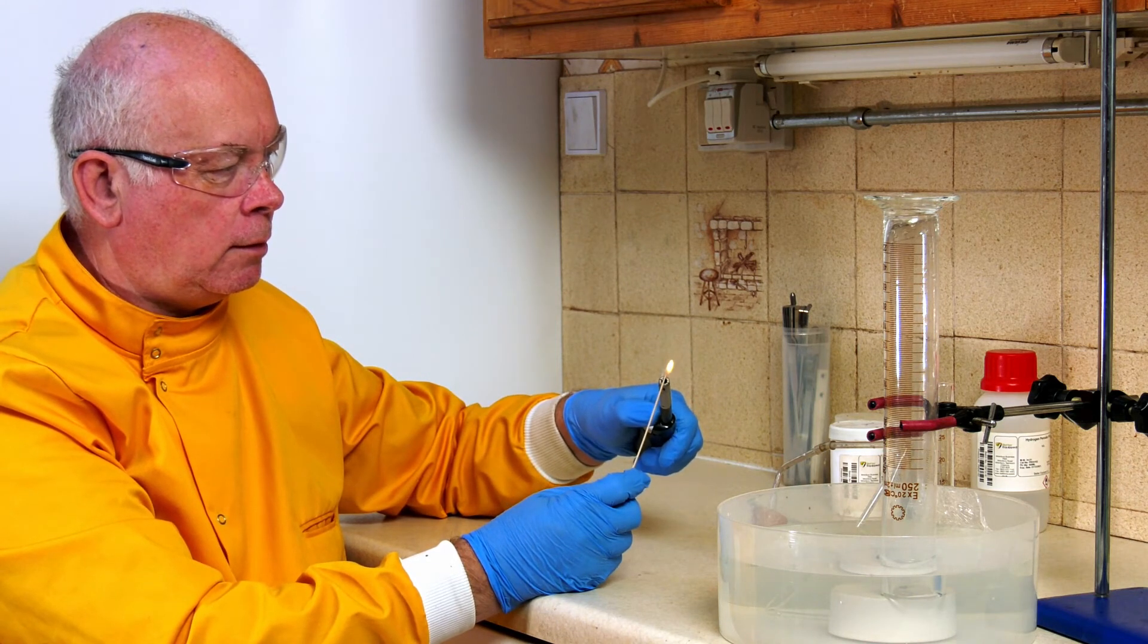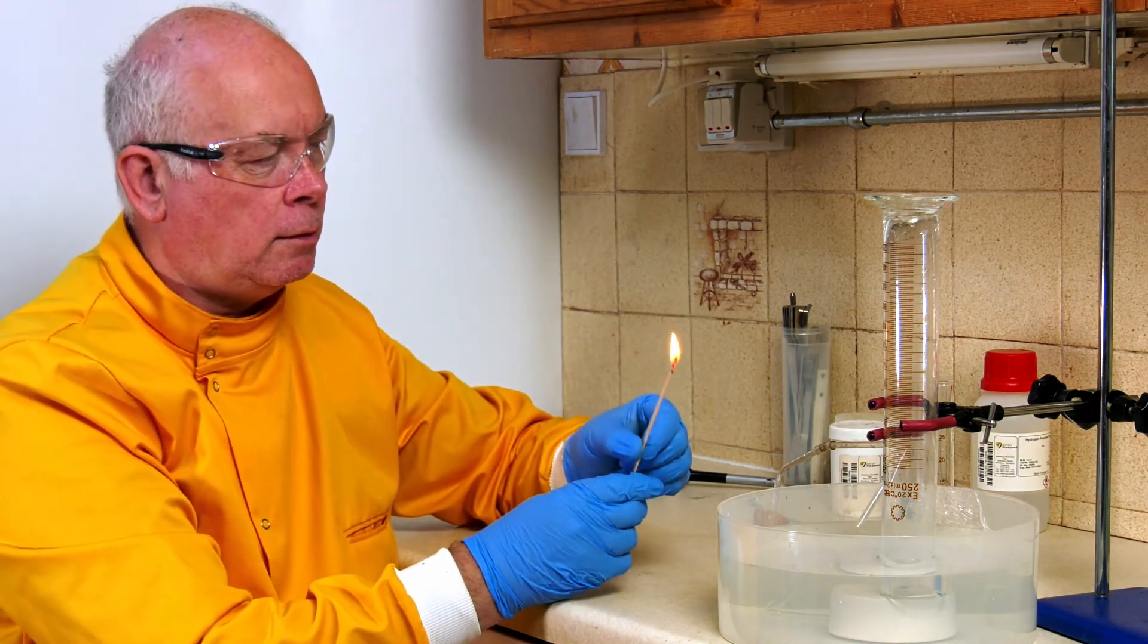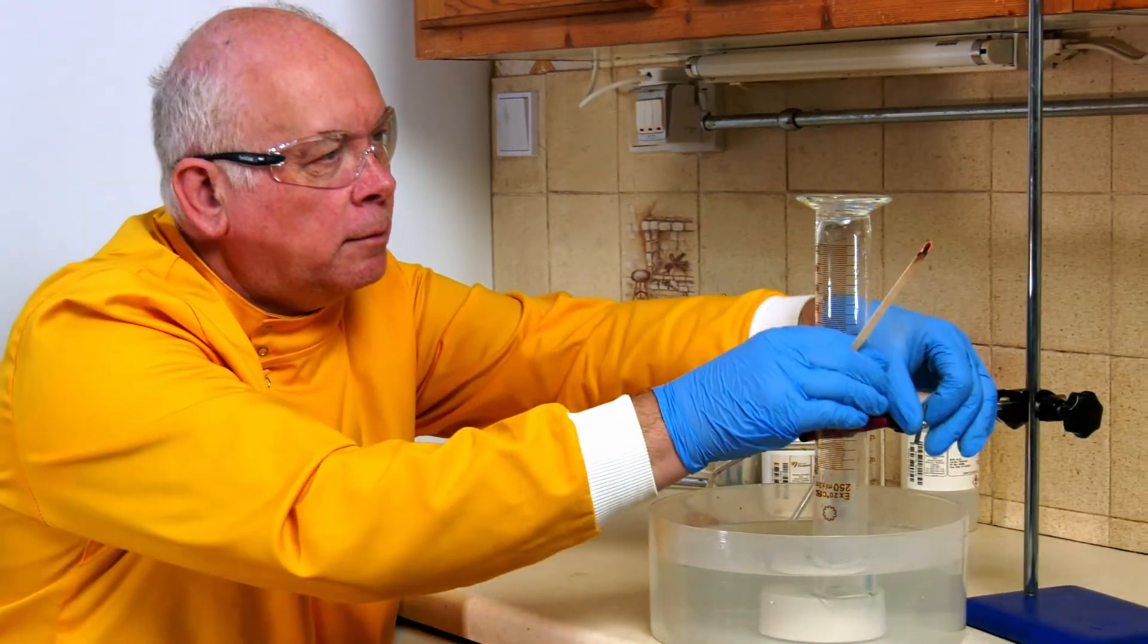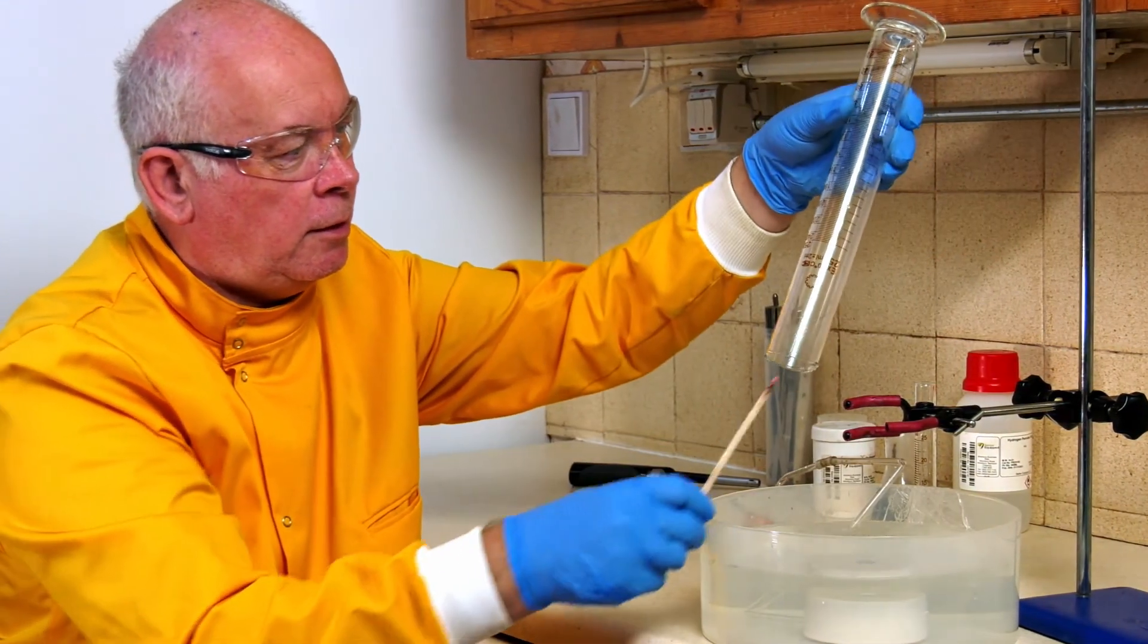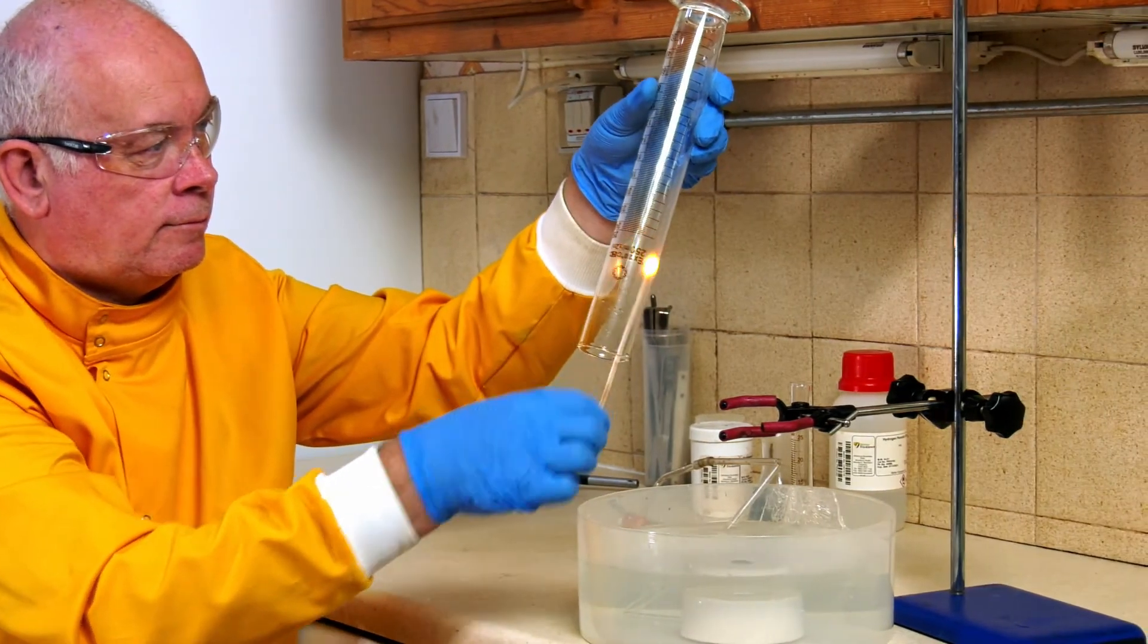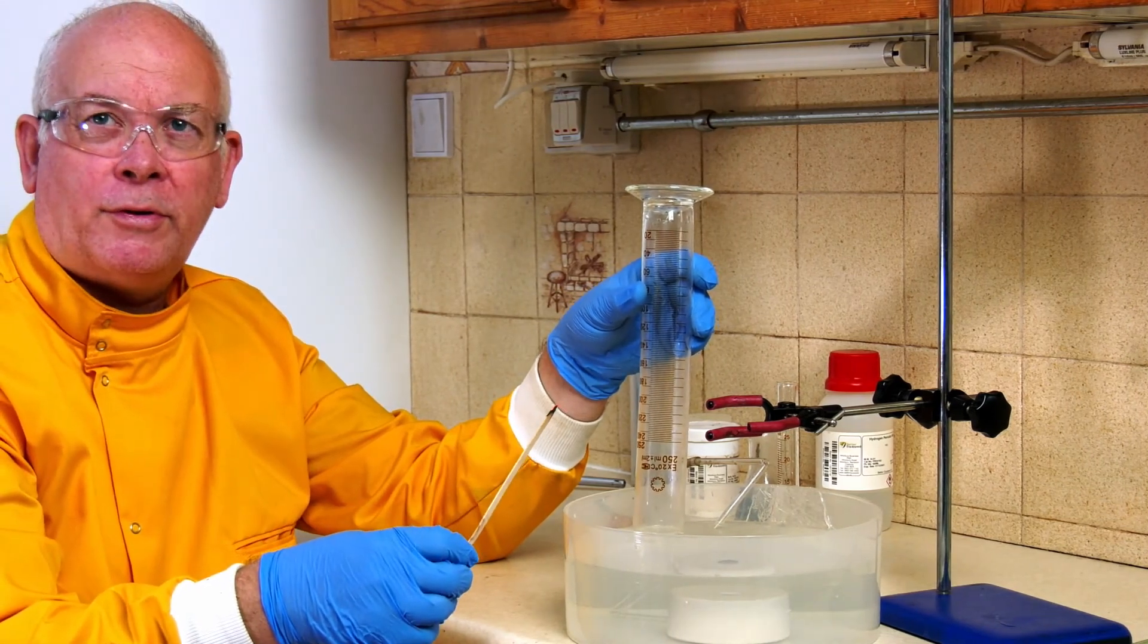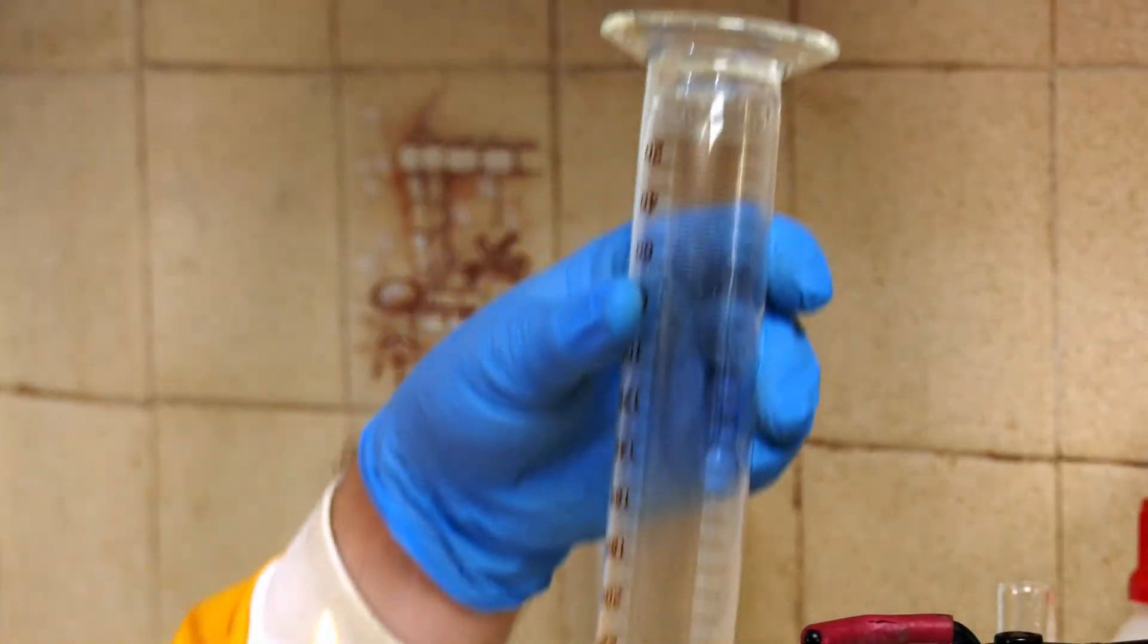If I take a lighted splint - and it's still glowing at the side - what I'm going to do is make it go out. It's still glowing, and what I should be able to do is relight it by putting it into oxygen. Do that again. And I imagine we can do a third time for good measure. And there's our evidence - we've actually produced oxygen gas.